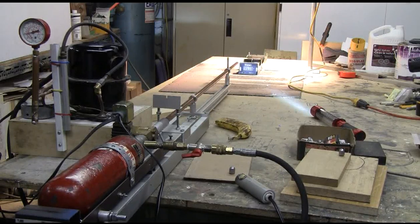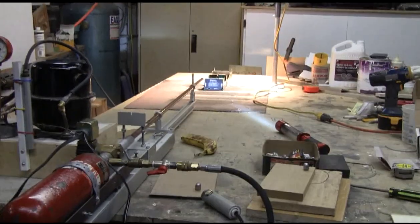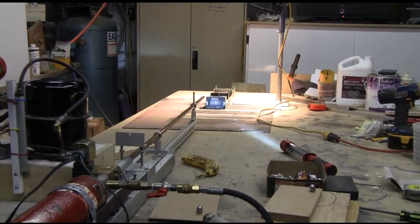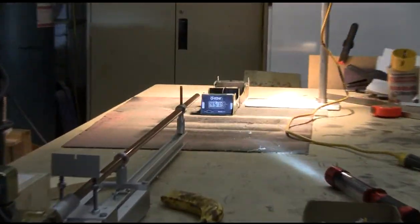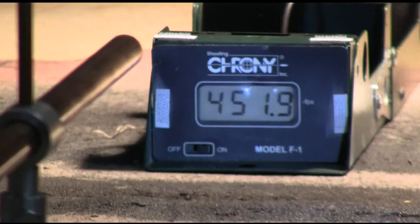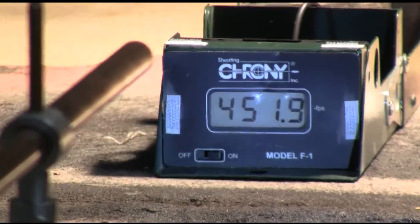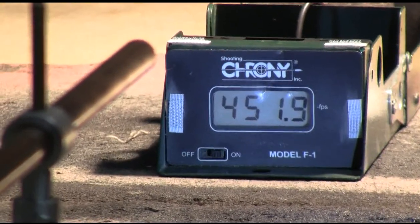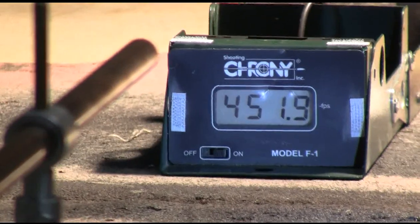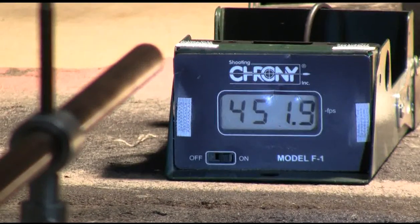Now let's zoom in on the chronograph and see what we got. 451.9 feet per second for a 360 grain slug.